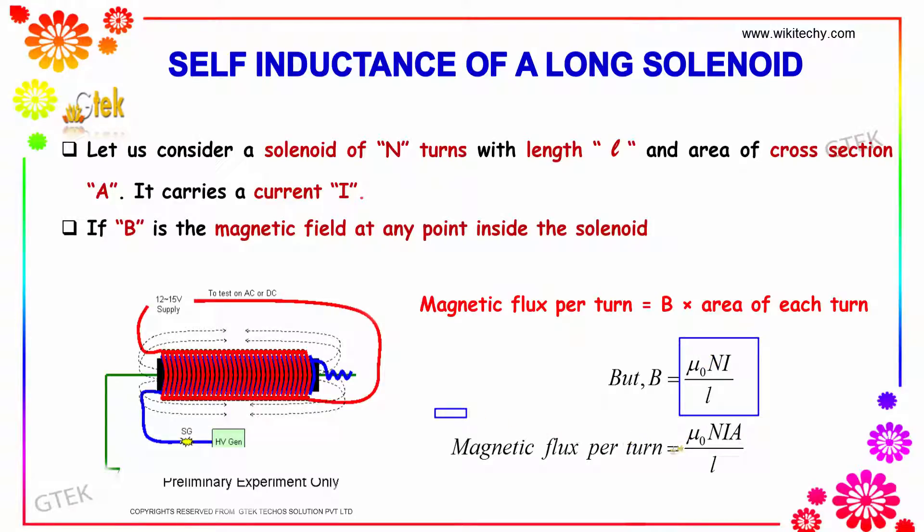So, the magnetic flux per turn equals μ₀NIA divided by L.